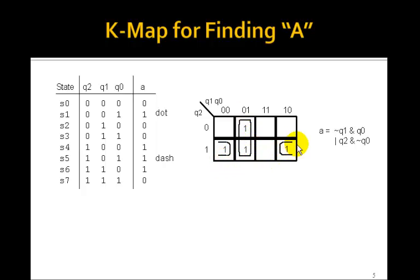You draw the Karnaugh map and you see that the logic equation is just not Q1 and Q0 or Q2 and not Q0. So now we know the logic equation for A and we just need to make the 3-bit counter.